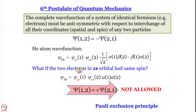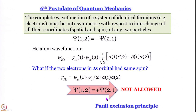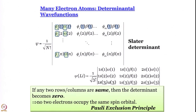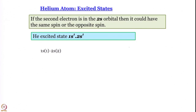If the two electrons in the 1s orbital had the same spin, we would get psi_1s(1) psi_1s(2) multiplied by alpha(1)alpha(2), which gives psi(1,2) equal to psi(2,1) — and that is not allowed. This is what leads to the Pauli exclusion principle. We have extended this idea by looking at Slater determinants of bigger atoms as well. This is where we stopped in the last module.